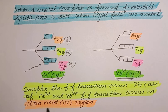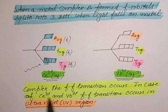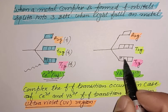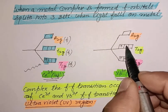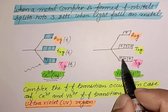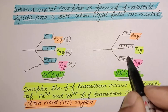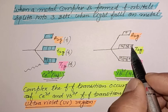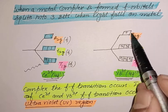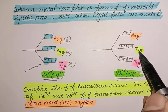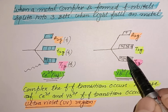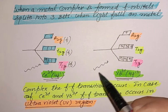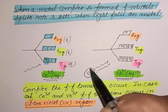In the case of Ce³⁺ and Yb³⁺, the f-f transitions occur but not in the visible region — they occur in the ultraviolet region. Since we cannot see ultraviolet light, those transitions do not produce visible color. For Yb³⁺ with 13 electrons in the 4f orbitals, the one unpaired electron moves from a lower energy f orbital to a higher energy f orbital when ultraviolet light falls on the complex.